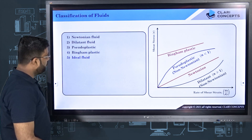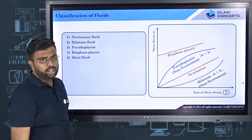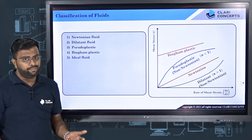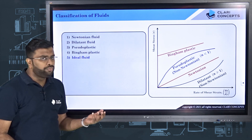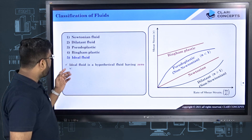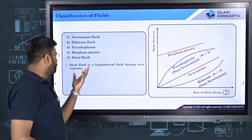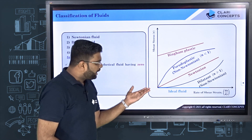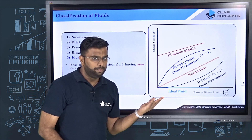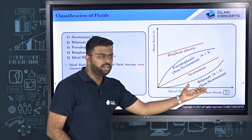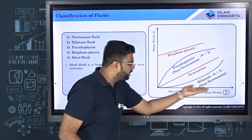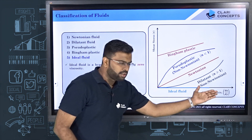The fifth category is ideal fluid. There is nothing called an ideal fluid in nature — it is a hypothetical fluid having zero viscosity. In the shear stress versus rate of shear strain graph, zero viscosity means the line has zero slope, i.e., it is totally horizontal.